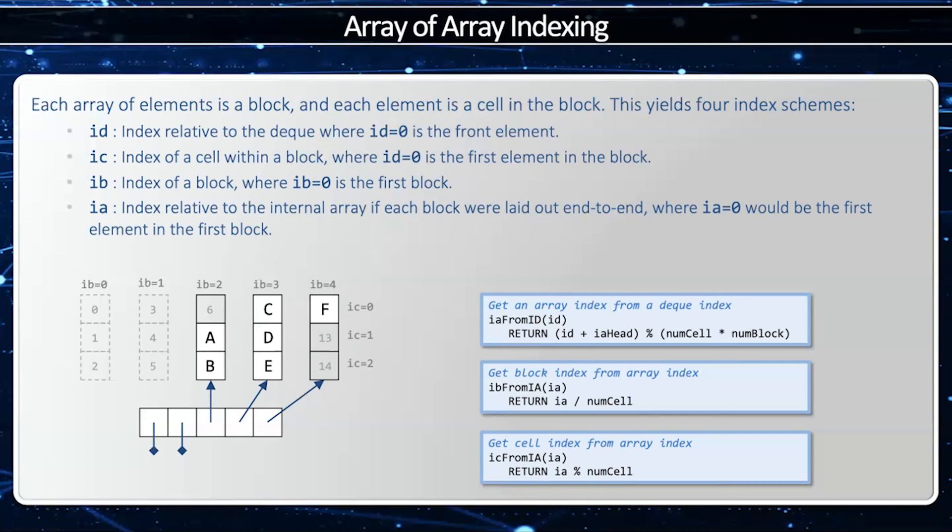Index cell will tell me the index of the cell within a block. In this example, I have cell size of 3, so my cell indices will be 0, 1, and 2. Then I have a collection of blocks. In this case, I have five blocks, block index 0 through 4.